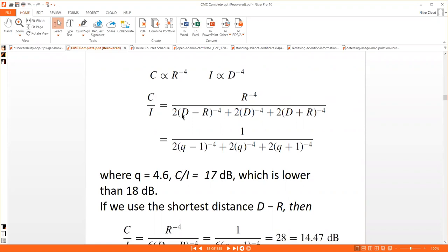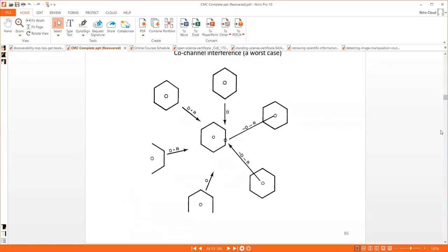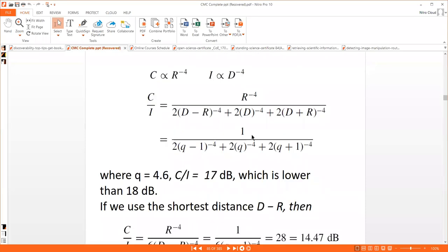For the worst case, two values of d are there, two values of d minus r, and two values of d plus r. Using the relationship q equals d/r, the coarse channel interference reduction factor, we get the formation: C/I = 1/(2(q-1)^-4 + 2q^-4 + 2(q+1)^-4).